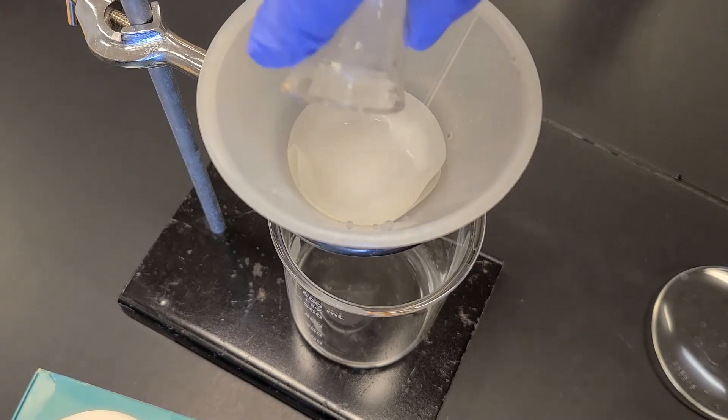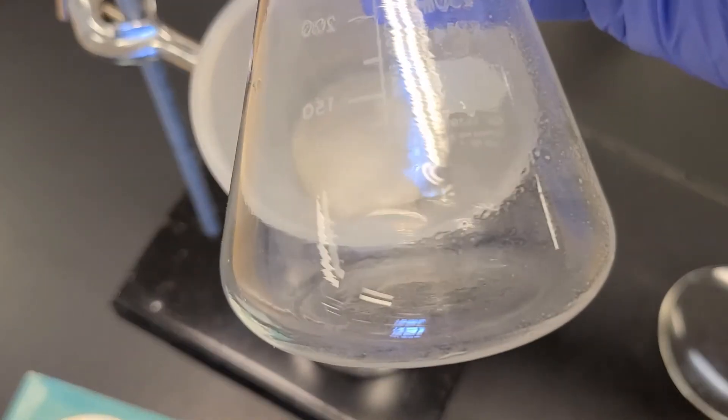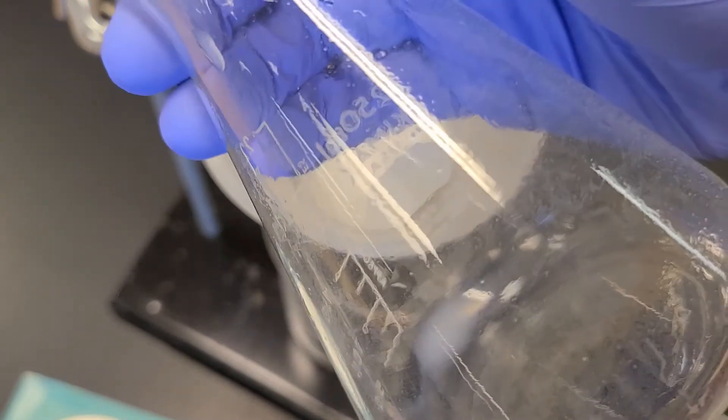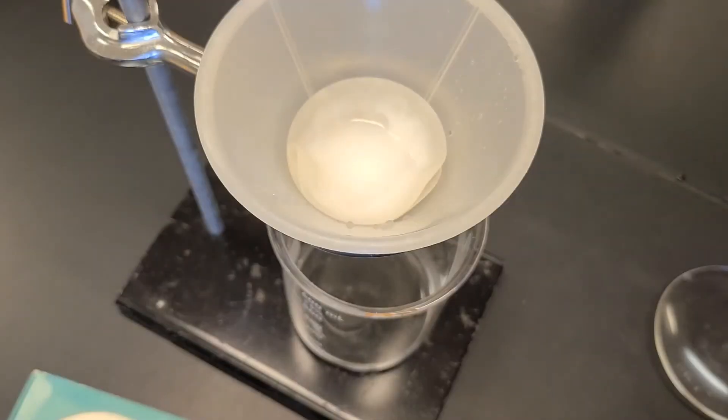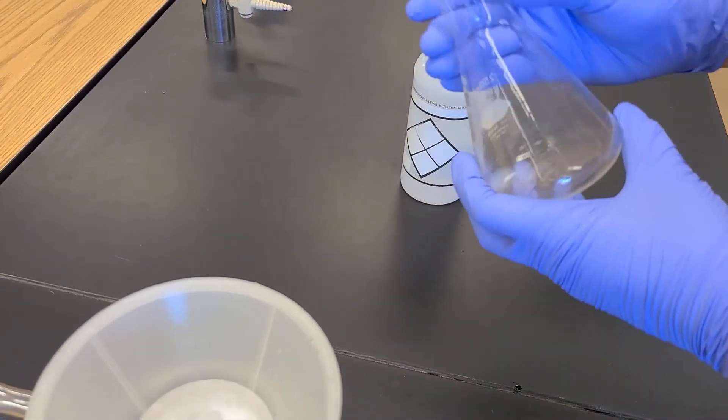I'm adding the last bit from the reaction flask. When you look at the edge of the flask, you see that it's all cloudy, so that's extra precipitate that we need to rinse off.